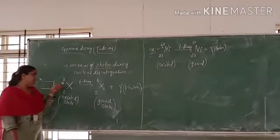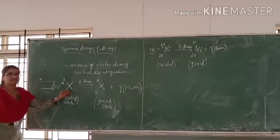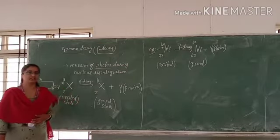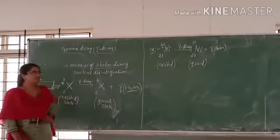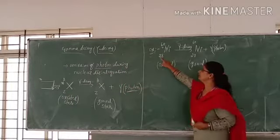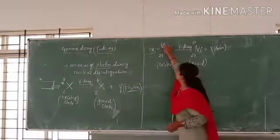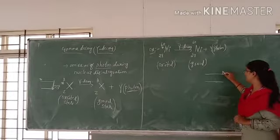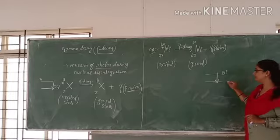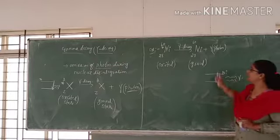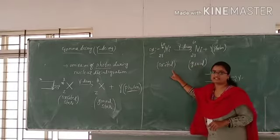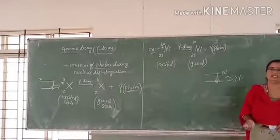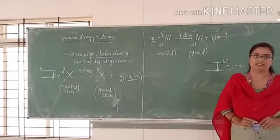When the parent nucleus in the excited state undergoes gamma decay, it returns to the ground state by the emission of a gamma photon. The energy emitted is nothing but gamma rays, which are photons. For example, nickel-60 with atomic number 28 and mass number 60 is in an excited state. The excited state is unstable, so it returns to the ground state and emits gamma photons. This completes alpha, beta, and gamma decay. Thank you.